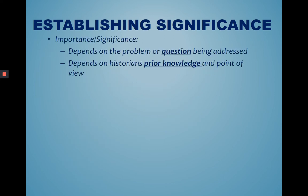Importance or significance, this depends on the problem or question being addressed. Something that is important to one person is not going to be important to another, as it depends on the historian's prior knowledge and point of view. This area can be tricky, as it might limit what information you see. It might also change the historical event, as we might only hear the popular opinion or the popular idea, as it is based on people's perspectives and point of view.